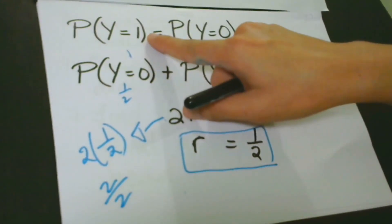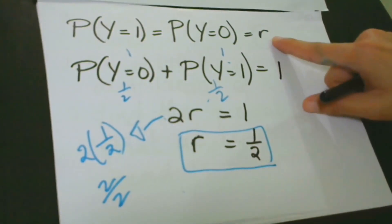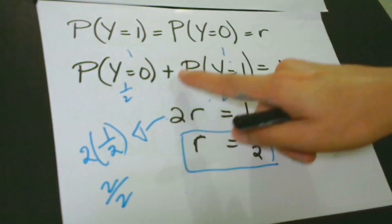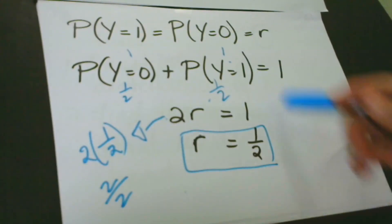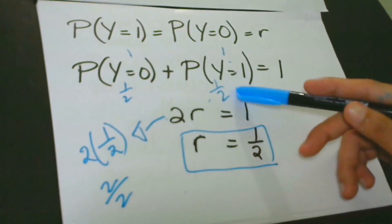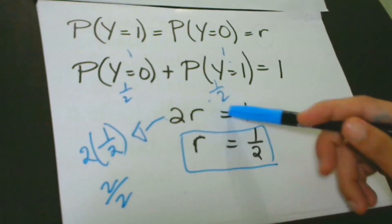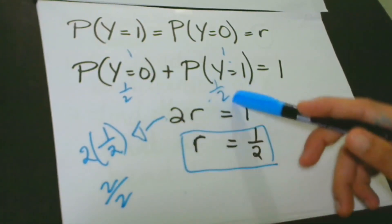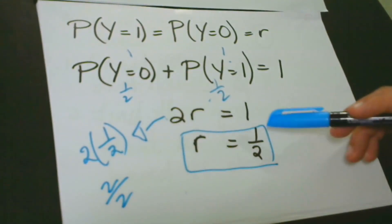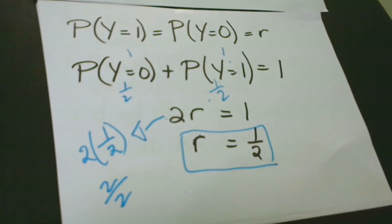Since P(Y=1) equals P(Y=0) equals R, and they must sum to 1, we have 2R equals 1. Each value is therefore 1 half — so P(Y=1) equals 1/2 and P(Y=0) equals 1/2, giving us 2 times 1/2 equals 1. The probability of each outcome for a fair coin is 1/2. Take note that this is a uniform and discrete probability.